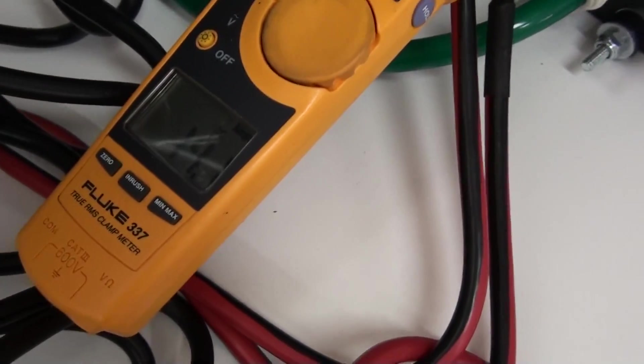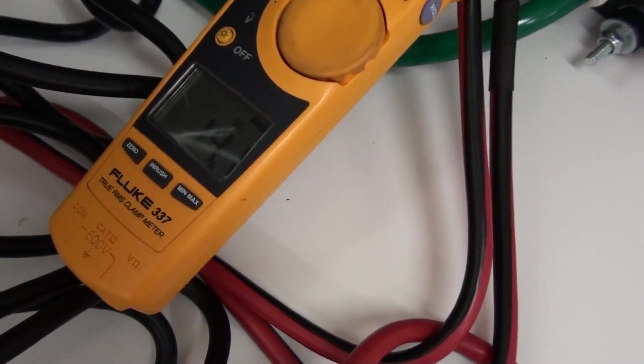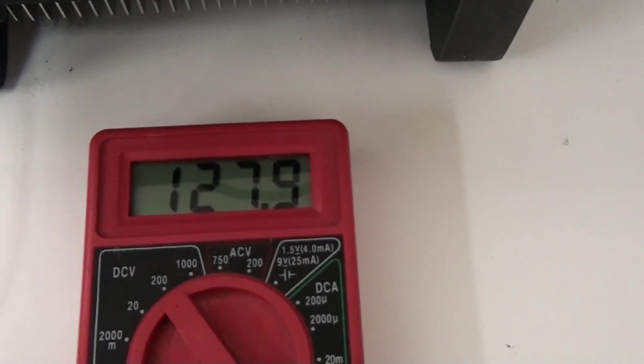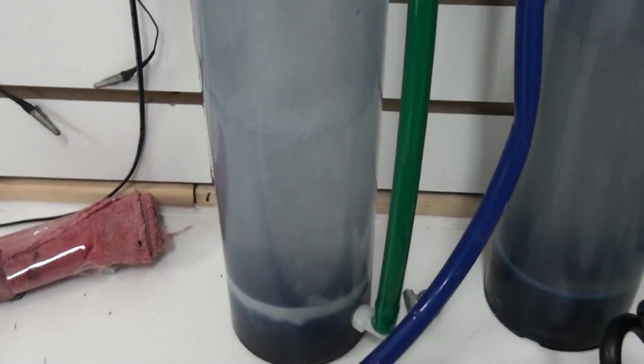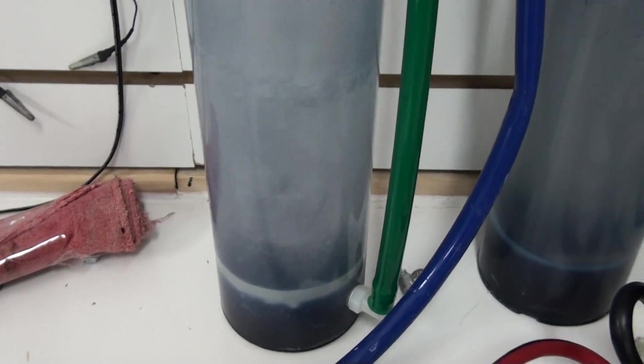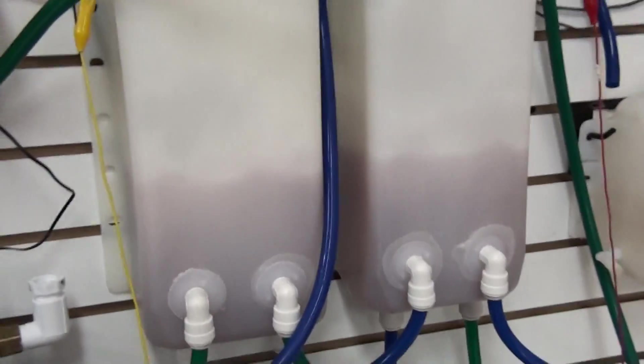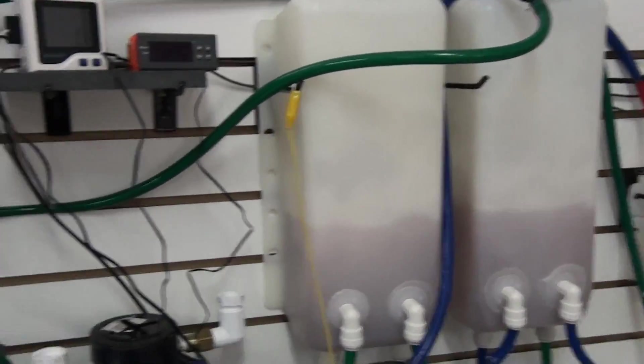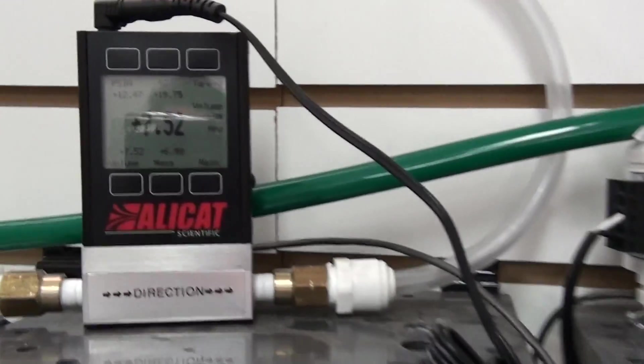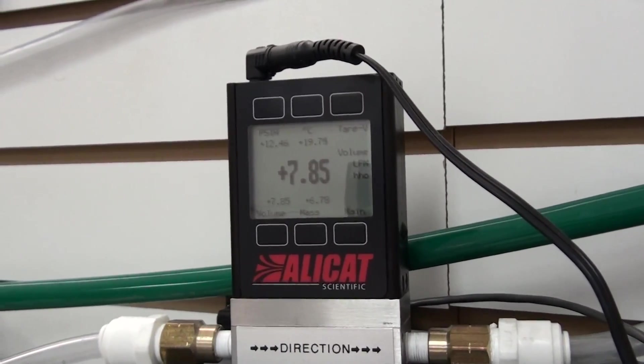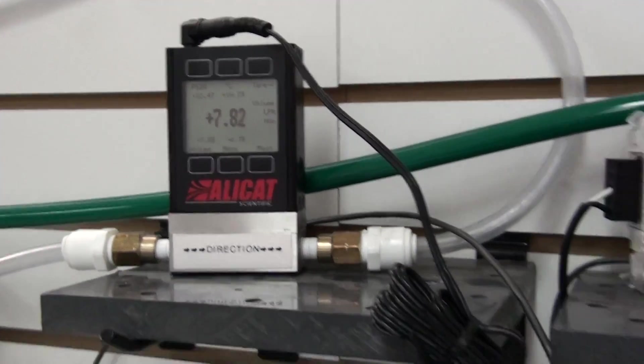You can see the amps there, a little over 14 amps. And the voltage here, a little over 127 volts. And I'll show you the production. There's the tanks. And here is the liters per minute, 7.8 liters per minute.